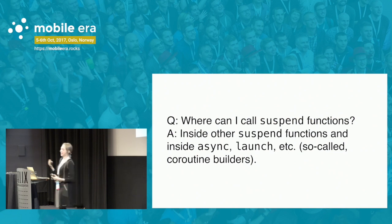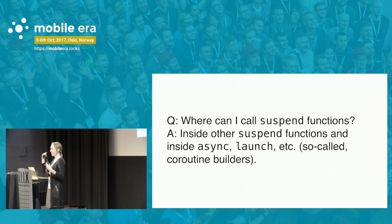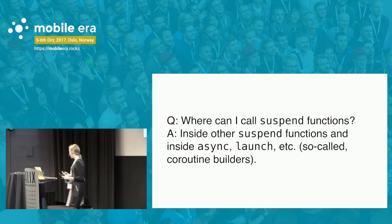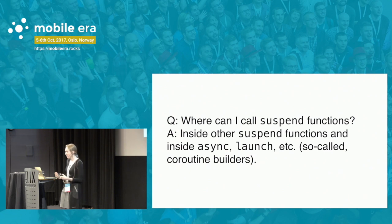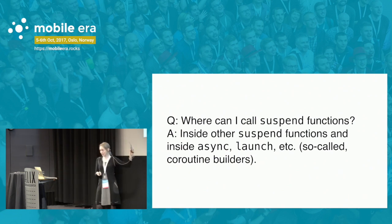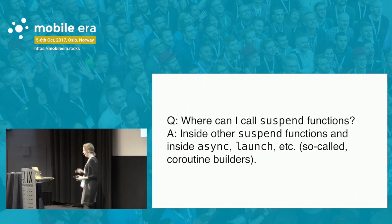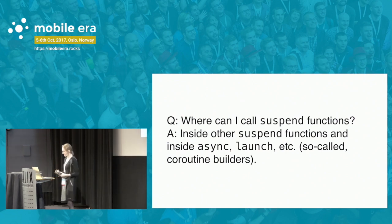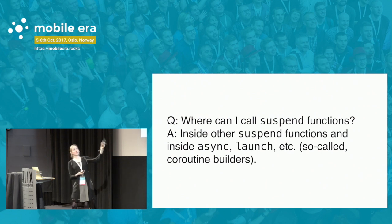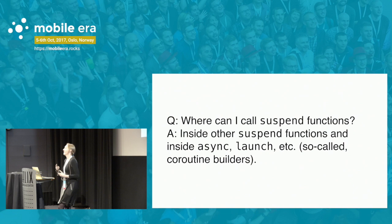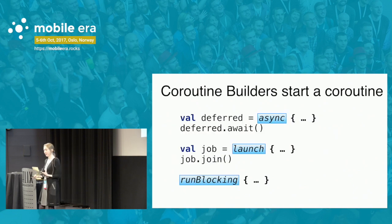IntelliJ/Android Studio gives you an arrow icon illustrating every point where the computation might be suspended — every suspension point is shown explicitly in the IDE. This is like the most important slide: it illustrates the power of coroutines and suspend functions. Where can you call suspend functions? The answer is: inside another suspend function, or in so-called coroutine builders. Async and launch are coroutine builders defined in the library.